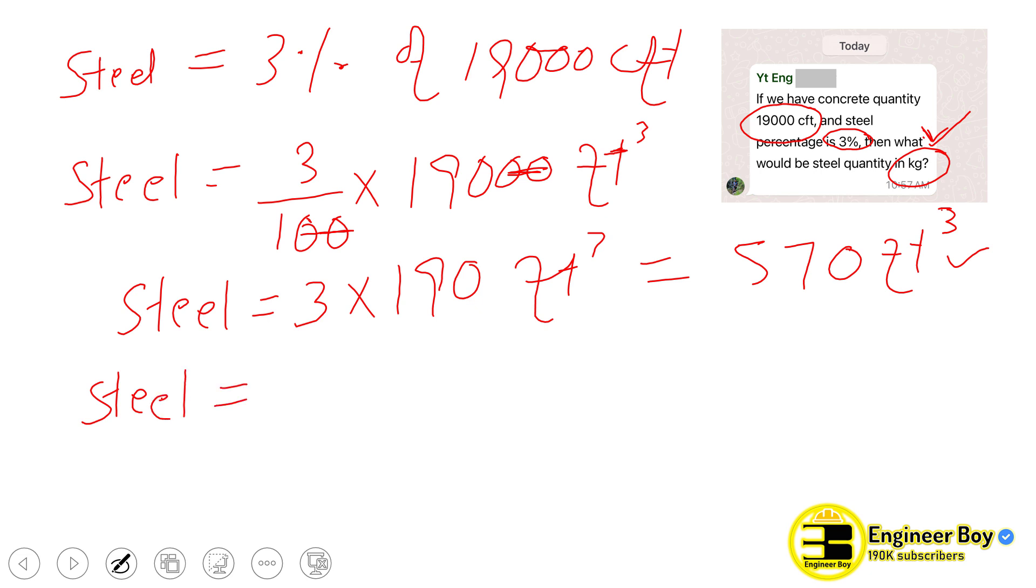So steel must be 570 cubic feet. We will multiply this volume with the density of steel. Remember, you must know what is the density of mild steel, or any other steel. Mild steel is the steel which is commonly used in concrete work, in RCC work.